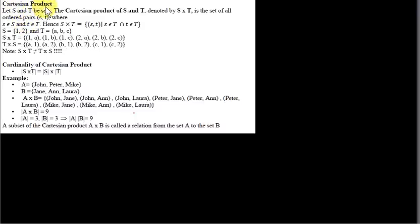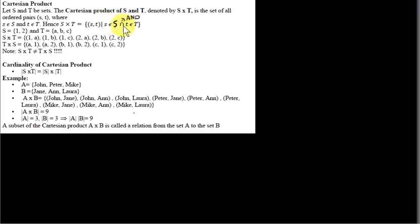The next thing I want to talk about is the idea of the Cartesian product of two sets. S and T are two sets. The Cartesian product of S and T, denoted S×T, is the set of all ordered pairs (s, t) where little s is in the set S and little t is in the set T. The small letters are particular elements; the capital letters represent sets.